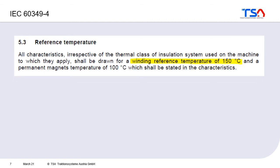Chapter 5.3 gives hints about typical temperatures for traction machines. Traction machines in the vertical business are usually highly utilized, so temperatures are higher than in typical industrial applications. When putting data into a datasheet, you should use special reference temperatures — for example, 150 degrees Celsius for the winding and 100 degrees Celsius for the permanent magnets.